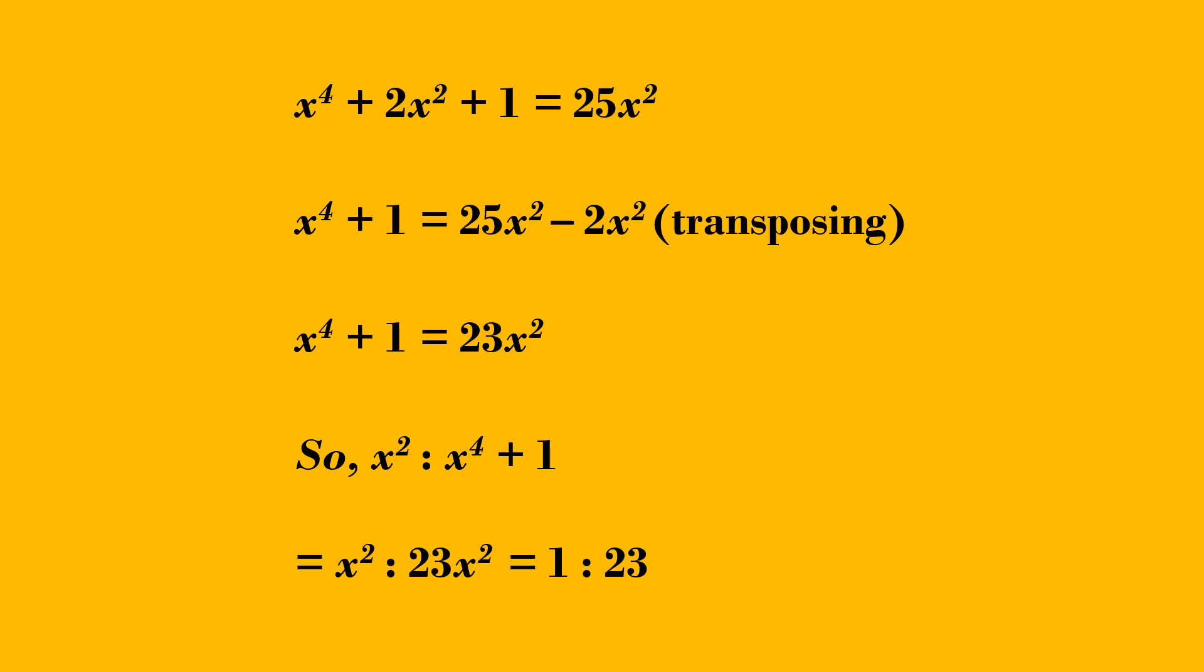Transpose 2x square to right side of equation. Now we get x power 4 plus 1 equal to 23x square.